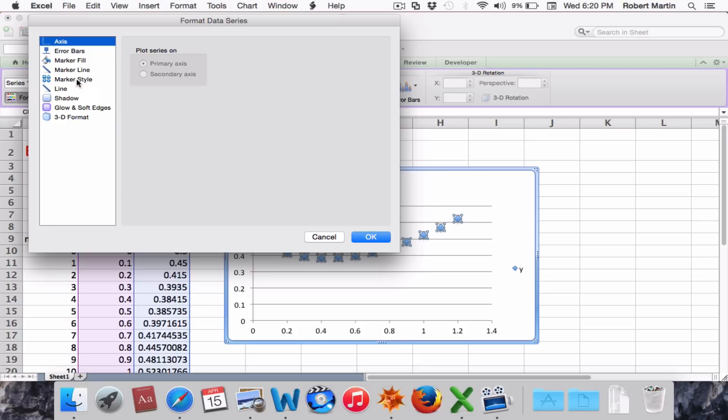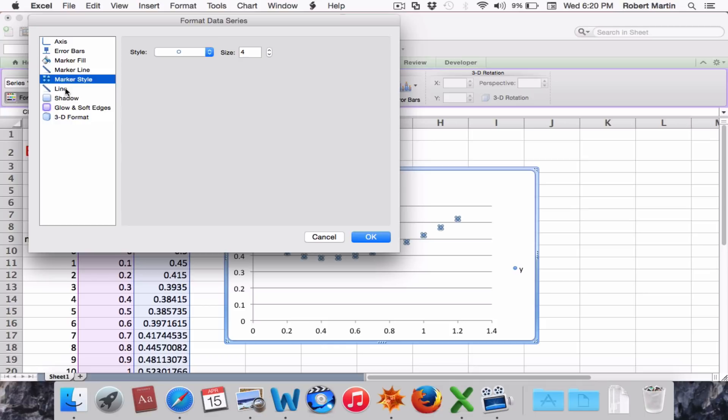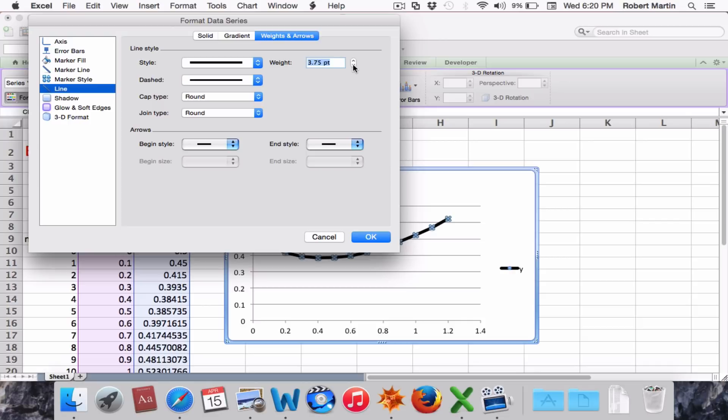And the first feature of those series I like to edit is the marker style. And I want to choose a bubble with a point size of 4. Now in addition to that, I want to continue to edit the series and install a line between the markers. So I'll come here and choose line, and I want it to be 1.5 points in thickness. There we go.